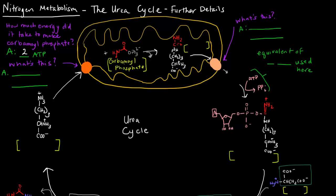The carbamoyl phosphate is in the mitochondrial matrix of a liver cell. In order for this carbamoyl phosphate to move on to the urea cycle, it needs to join with this molecule here.